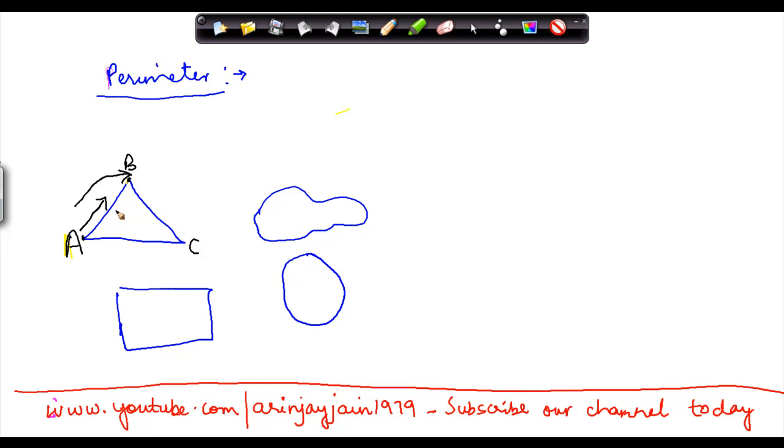Now, once I reach this point, I am asked to again move towards point number C. So I reach point C and then again from C, I am told to go back to A.